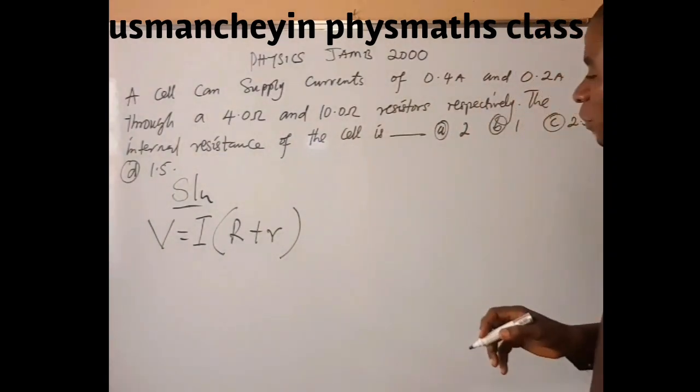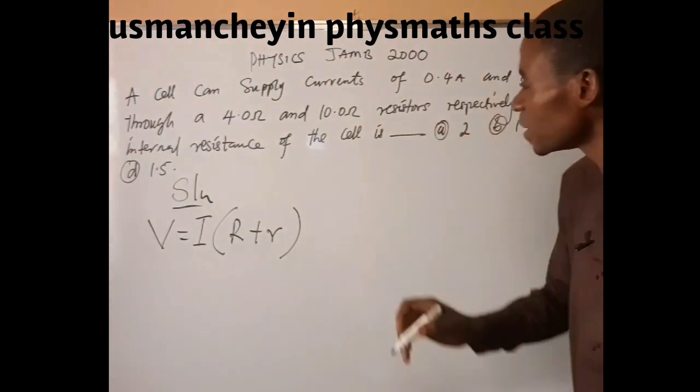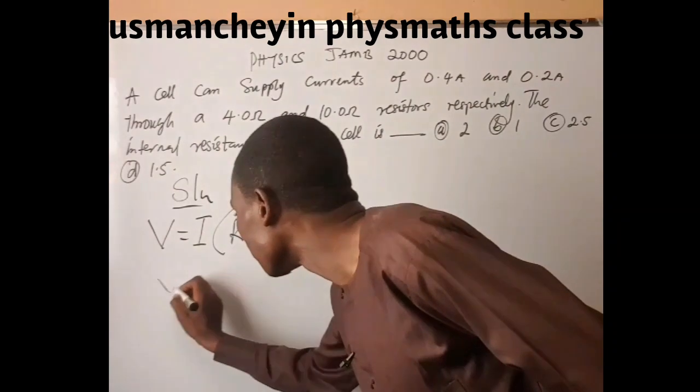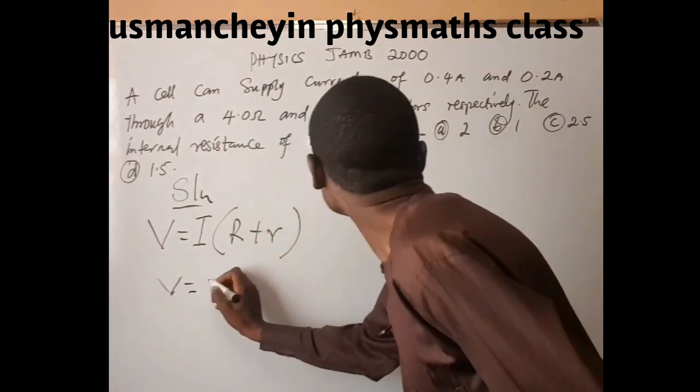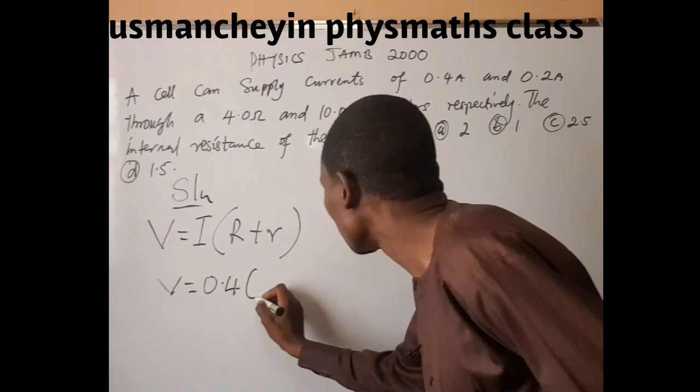For the first case, we can say that V equals 0.4 into (4 plus R). This can be our equation 1.